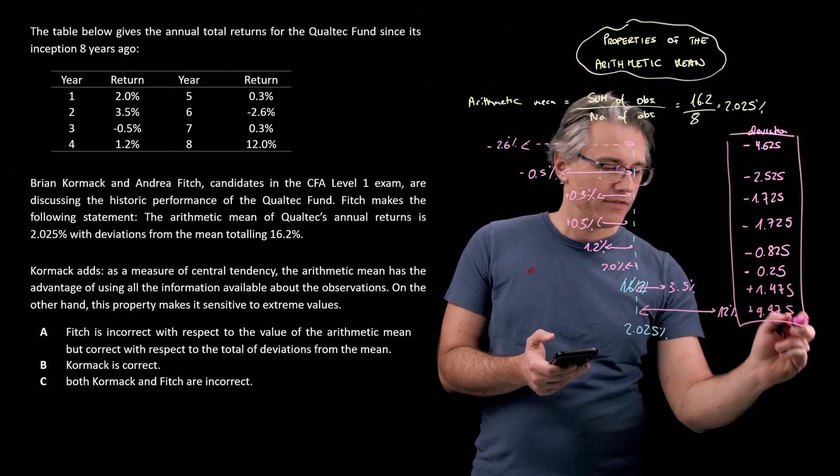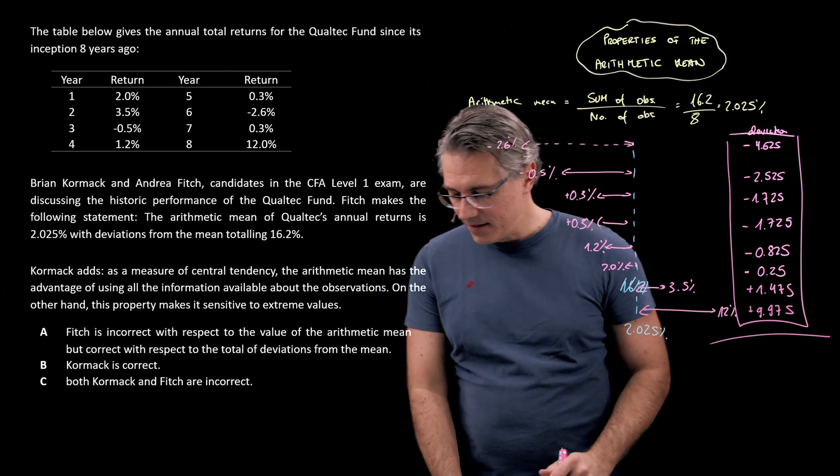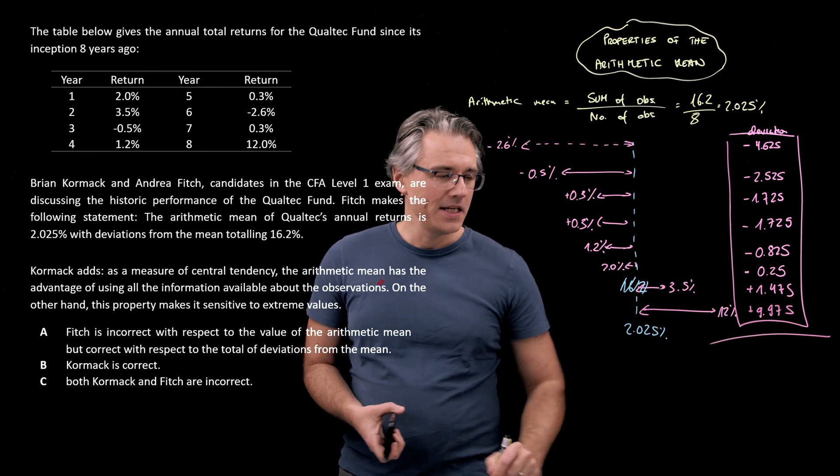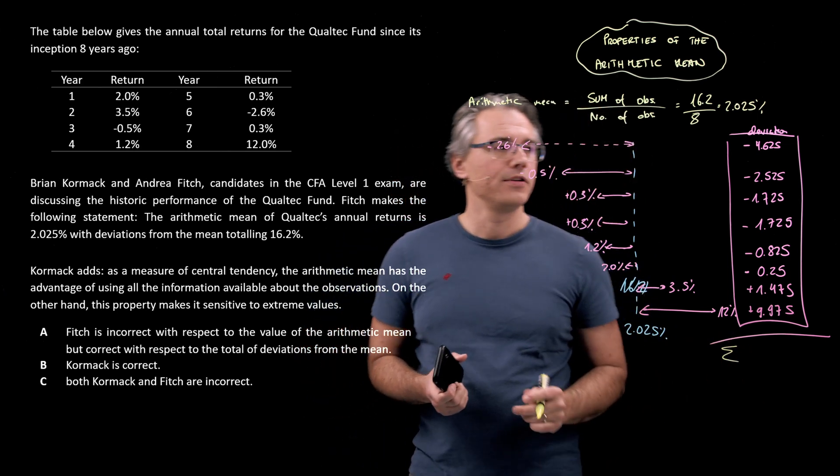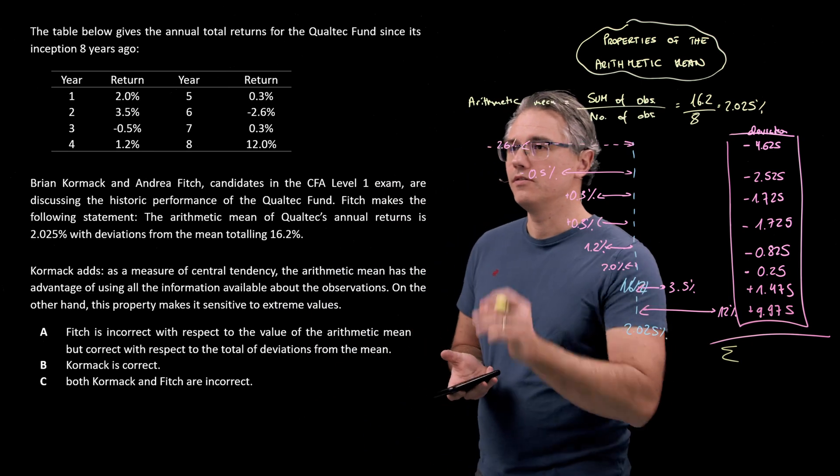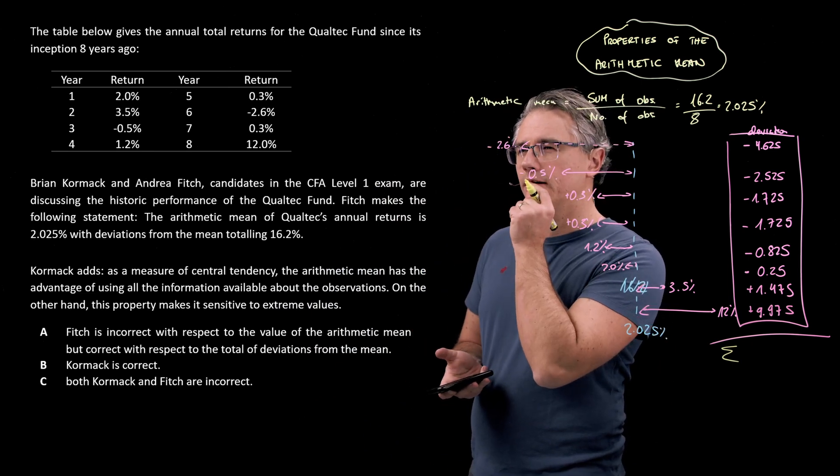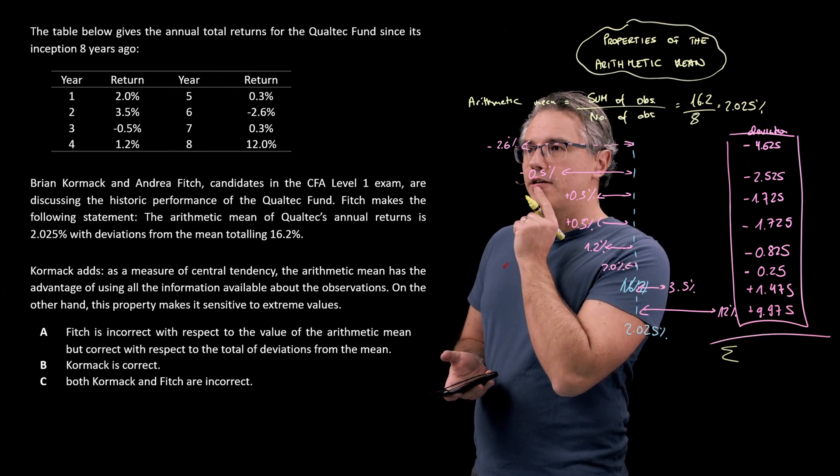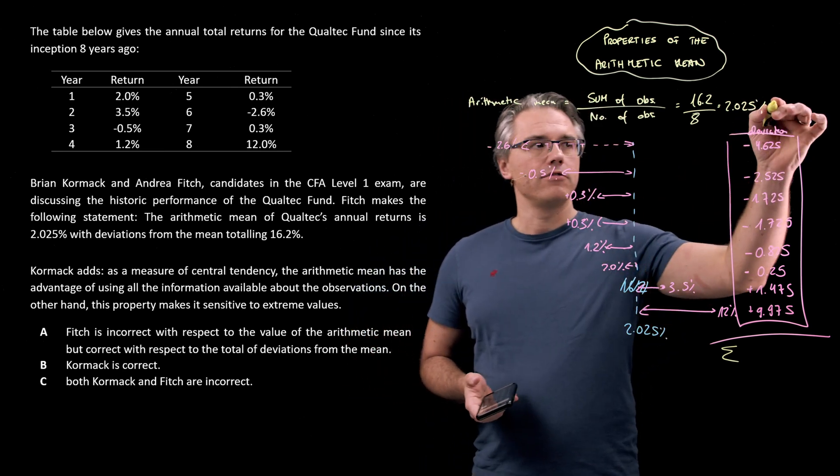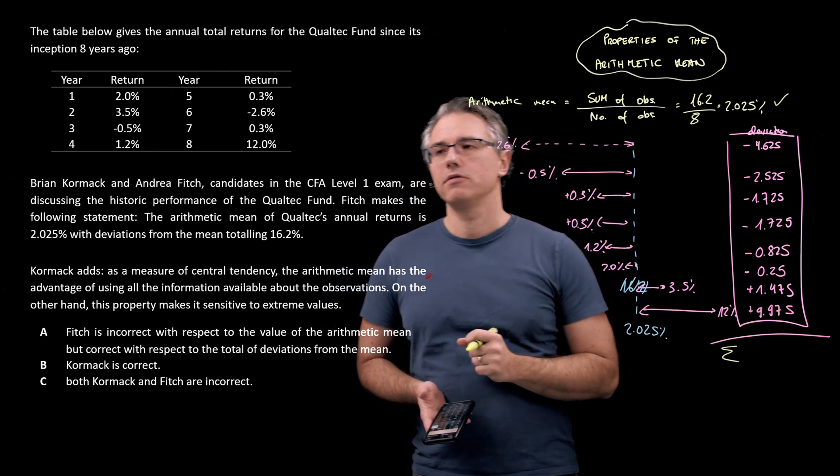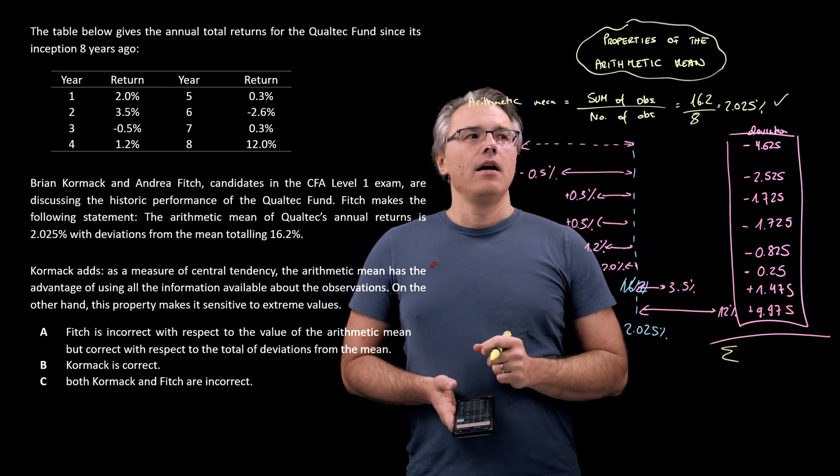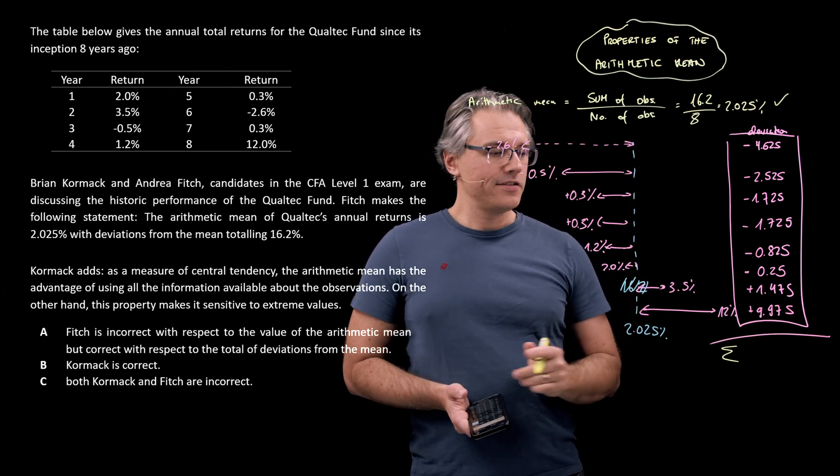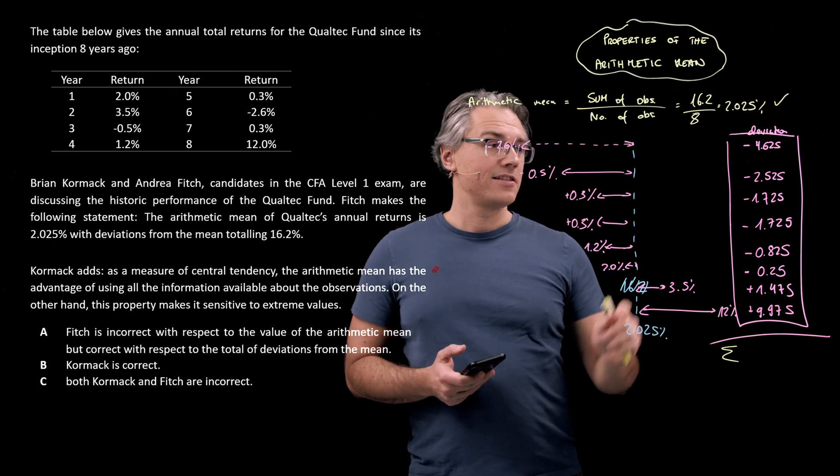So these are all the observations, which are painstakingly computed for your benefit. However, the beauty of the mean is what happens when you compute the total of these because that's what the question tells you, or that's what Fitch, I think, says. The arithmetic mean of Qualtex annual returns is 2.025. Well, that was absolutely right, with deviations from the mean totaling 16.2. Now, 16.2 was the sum of all the observations, but what's the sum of the deviations?